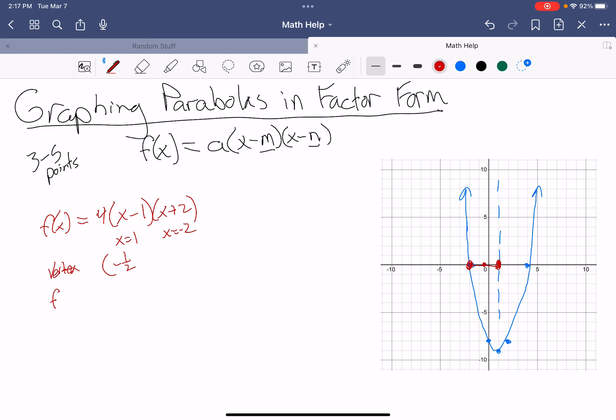I'm going to evaluate at negative 1 half. f of negative 1 half is equal to 4 times negative 1 half minus 1 times negative 1 half plus 2. Simplify that a little bit. That's 4 times negative 3 over 2, and then this would be 3 over 2. These 2s are going to cancel out with that 4, and I'm going to get negative 9 again. So at negative 1 half, negative 9 is where my vertex is.